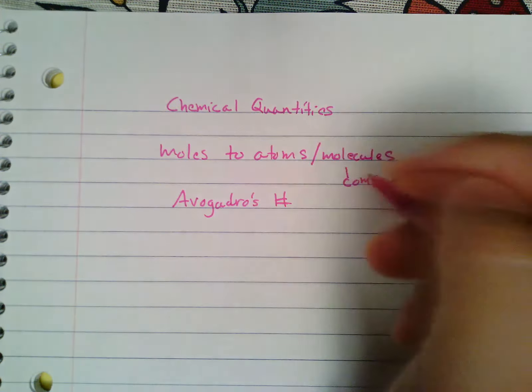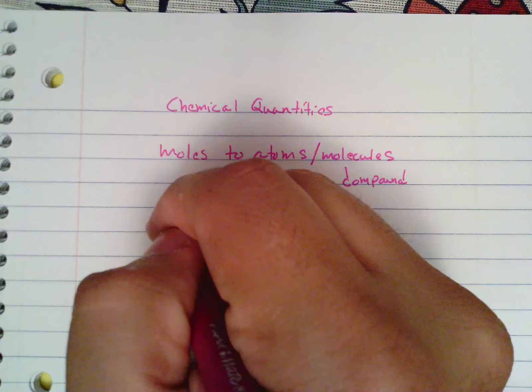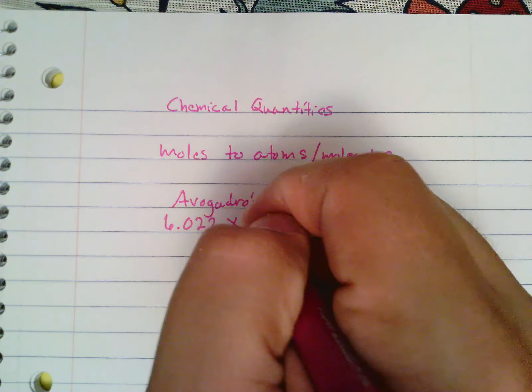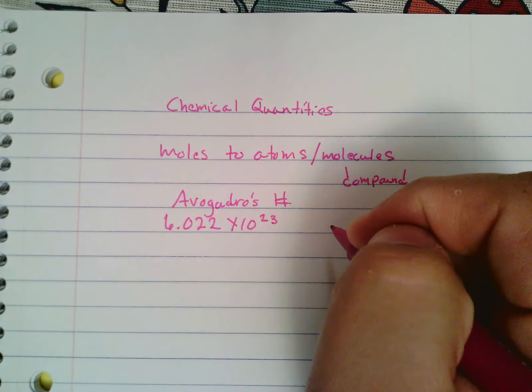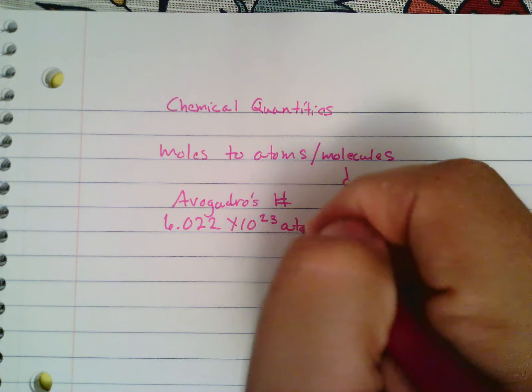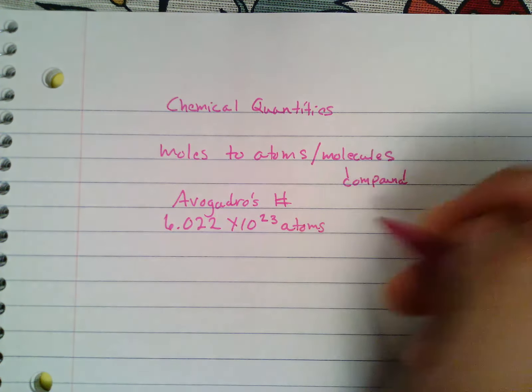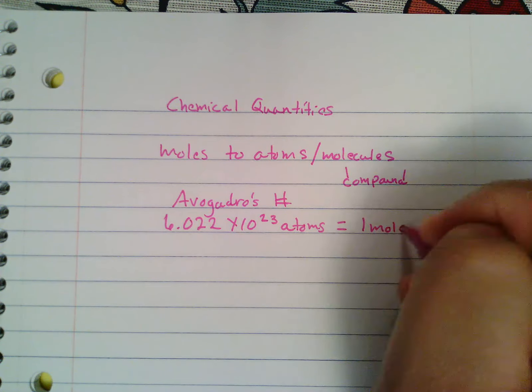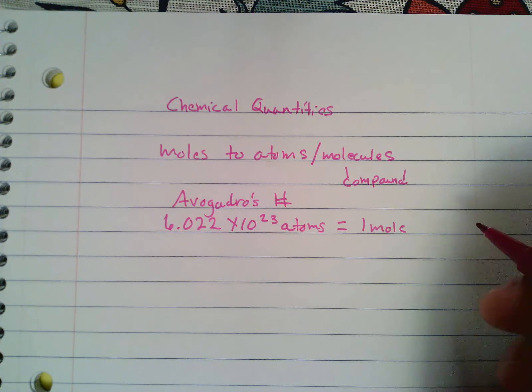To remind yourself, Avogadro's number is 6.022 times 10 to the 23rd. The thing about that is it's going to be either atoms or molecules - we'll use atoms for now. That is always going to equal one mole, and it doesn't matter what the substance is. It's always the same thing for one mole - that never changes.